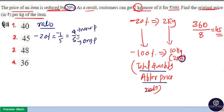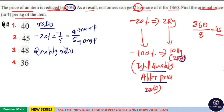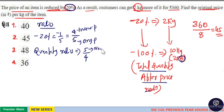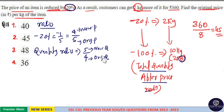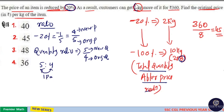Now this is the price ratio. We need the quantity ratio. Quantity ratio is the reverse of the price ratio. The price ratio is 4 by 5, so the quantity ratio is equal to 5 by 4. This means 5 parts is the new quantity and 4 parts is the original quantity. Now, 5 is to 4 means 5 minus 4 is 1 part. This 1 part is the difference in amount — 2 kilogram.